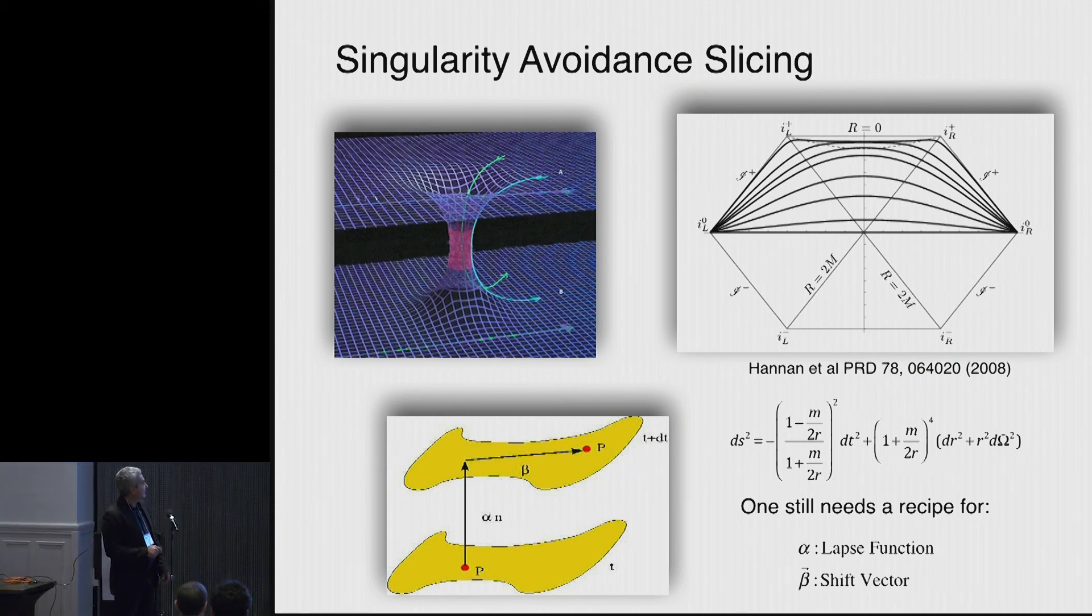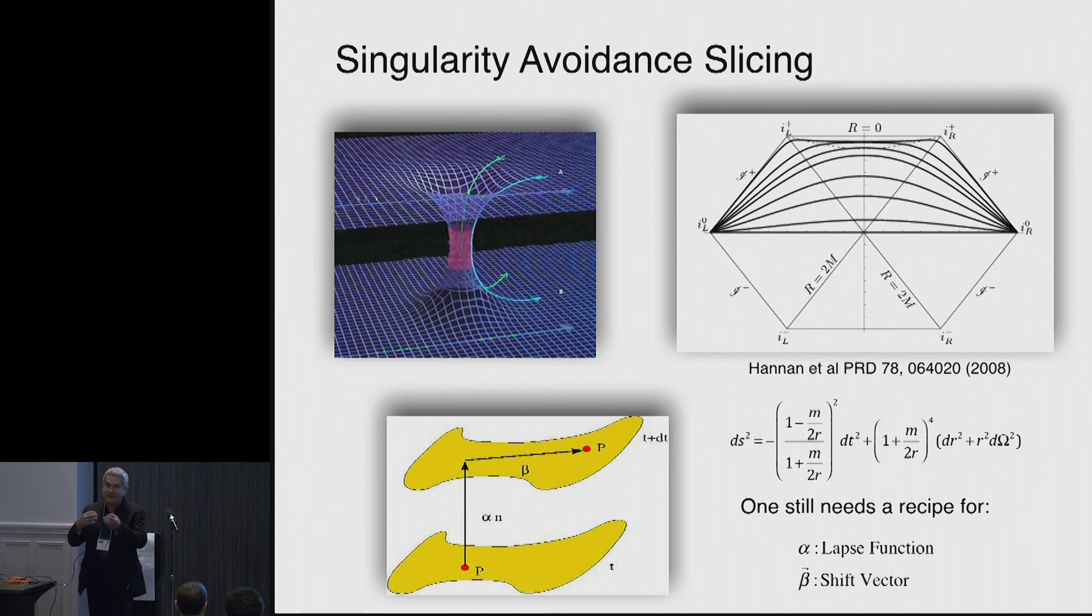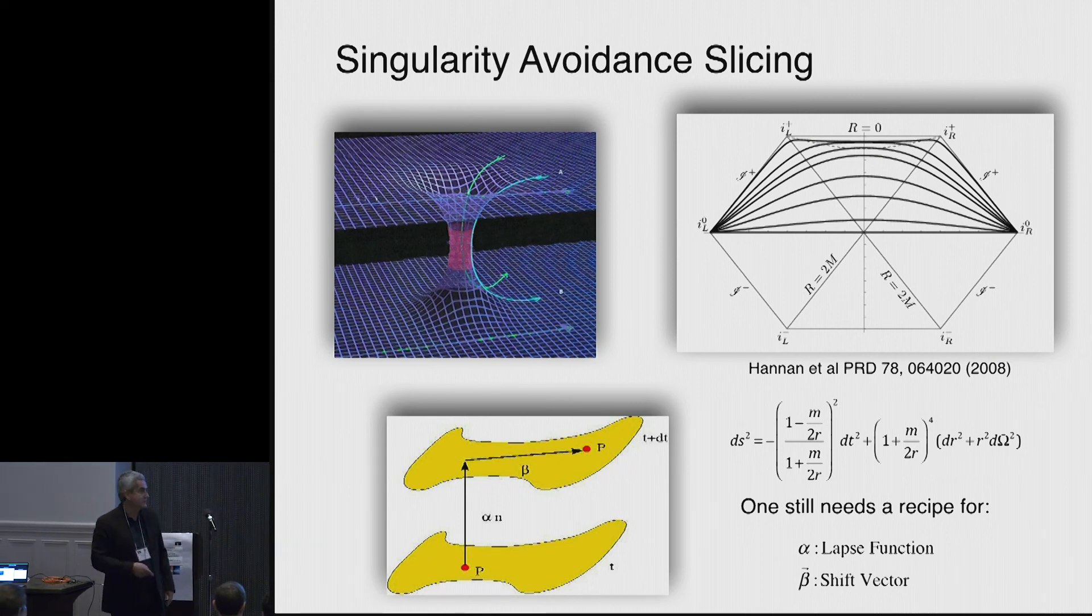The bottom line is that if you have multiple of this wormhole type objects, you're going to have to be able to provide a prescription of how you move forward in time and how your coordinates get shuffled around so the black holes don't get entangled and you lose the resolution.